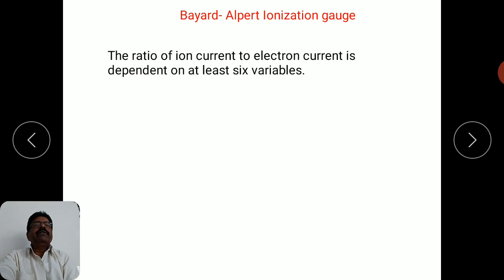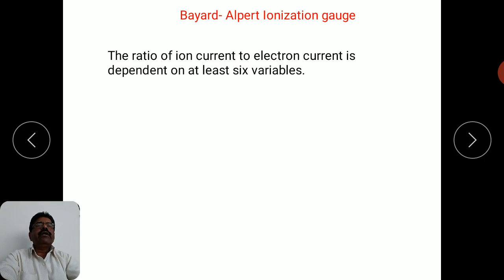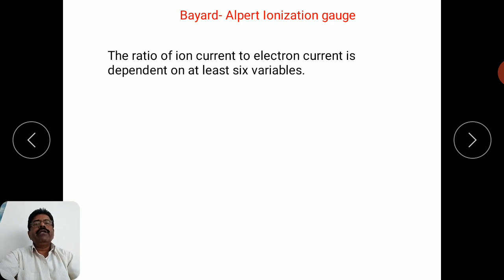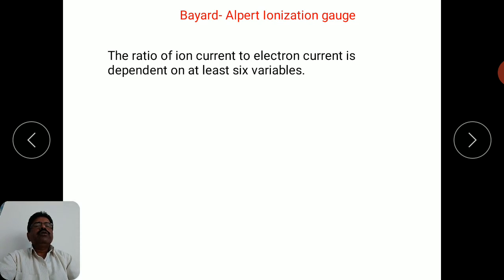One important parameter is the ratio of ion current to electron current, which depends on six different variables. The ion current represents the number of ions produced and the electron current represents the number of electrons available from the filament. This ratio indicates how many electron collisions have successfully produced ionization of gas molecules, and it depends on several parameters.